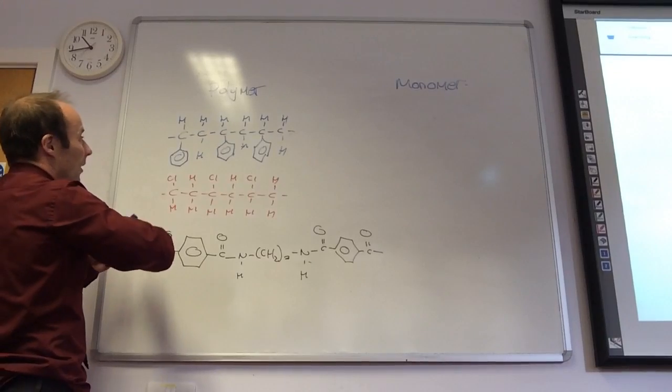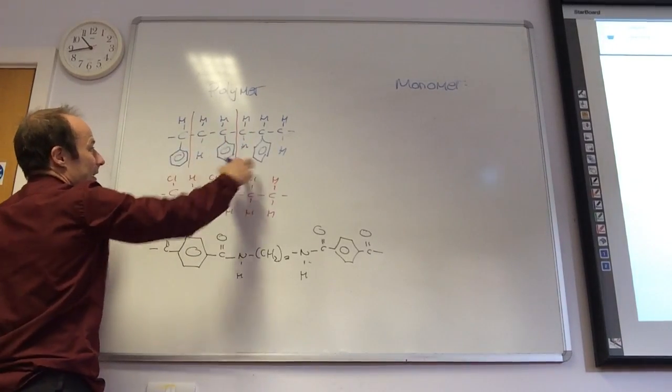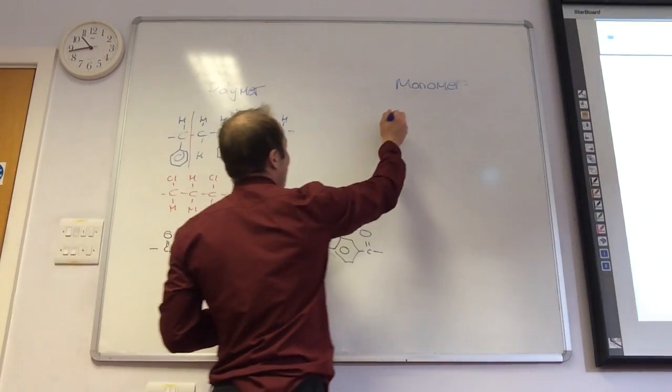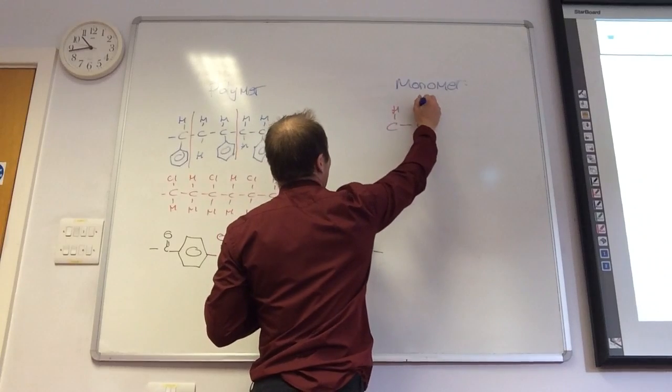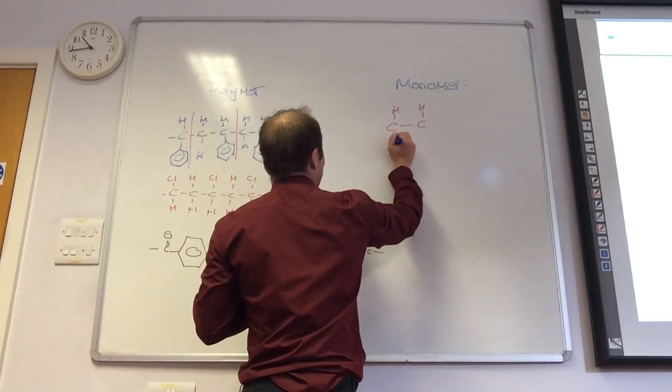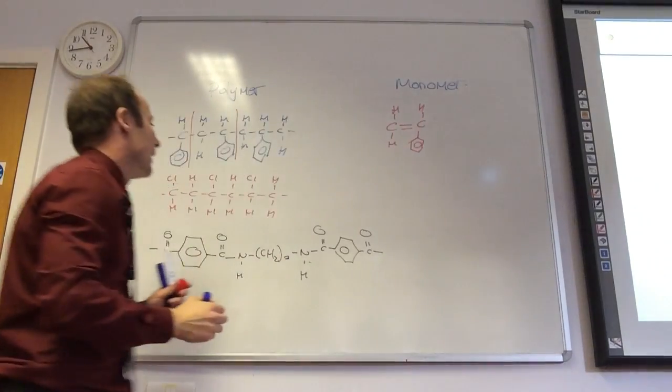monomer, let's look at the repeat unit. Looks like the repeat unit is that, because that's just repeated. So you just redraw the repeat unit, like so, but don't put the ends on, and then you know you must have a double bond there.